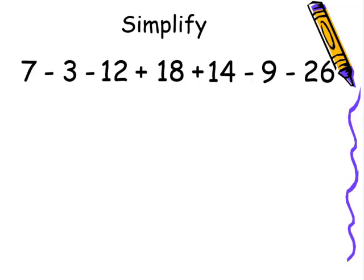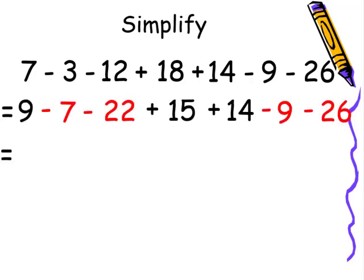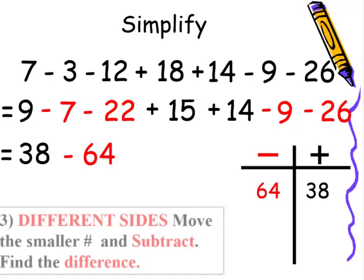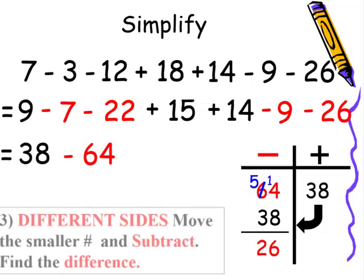Let's take a look at another example. First, we'll group all our positive numbers — the 9, the 15, and the 14 — and all our negative numbers — the 7, the 22, the 9, and the 26. 9 plus 15 plus 14 is 38. 7 plus 22 plus 9 plus 26 is 64. Using the t-chart: 38 is positive, 64 is negative. Since they're on different sides, we move the smaller number and subtract. 64 minus 38: we borrow one from the 6, making it 5, and add 10 to the 4, making 14. 14 minus 8 is 6, 5 minus 3 is 2. Since we're underneath the negative side, our result is negative 26. Therefore, 38 minus 64 is negative 26.